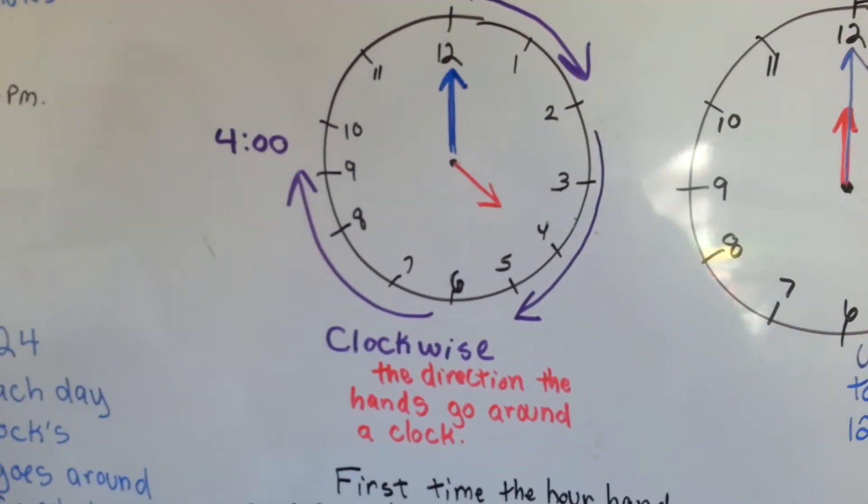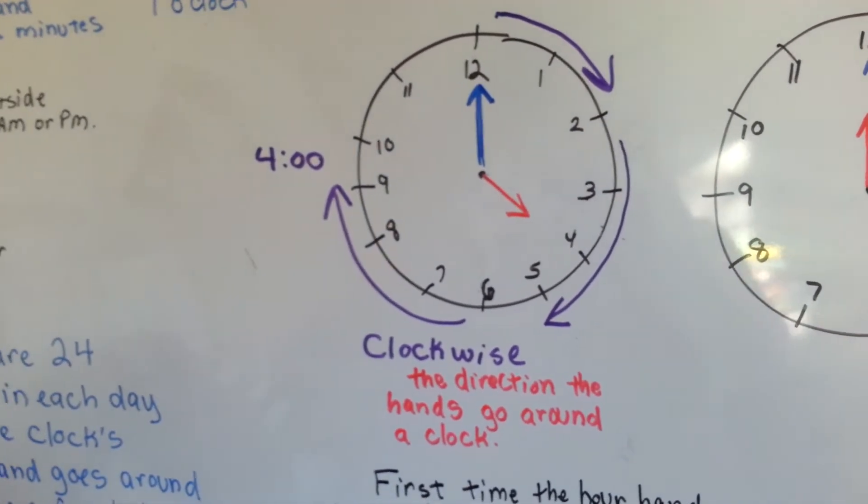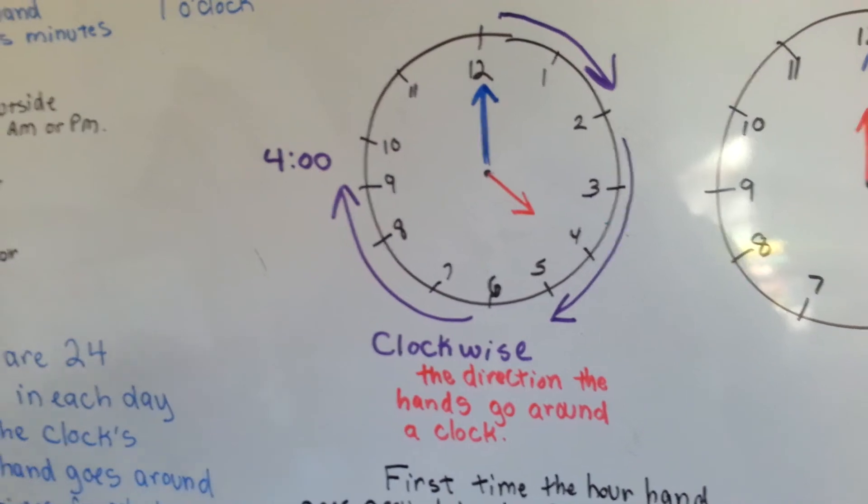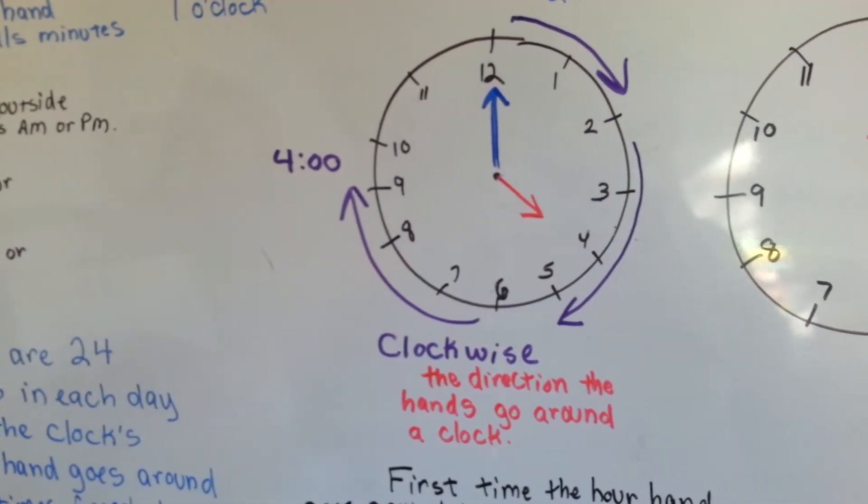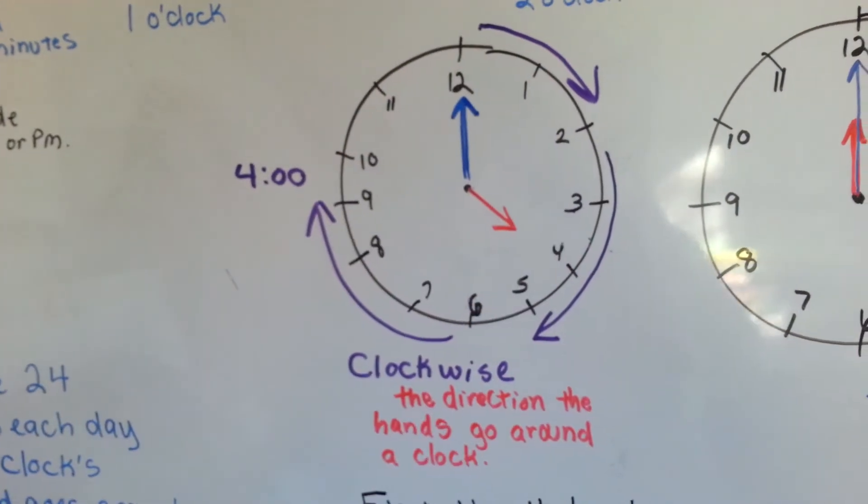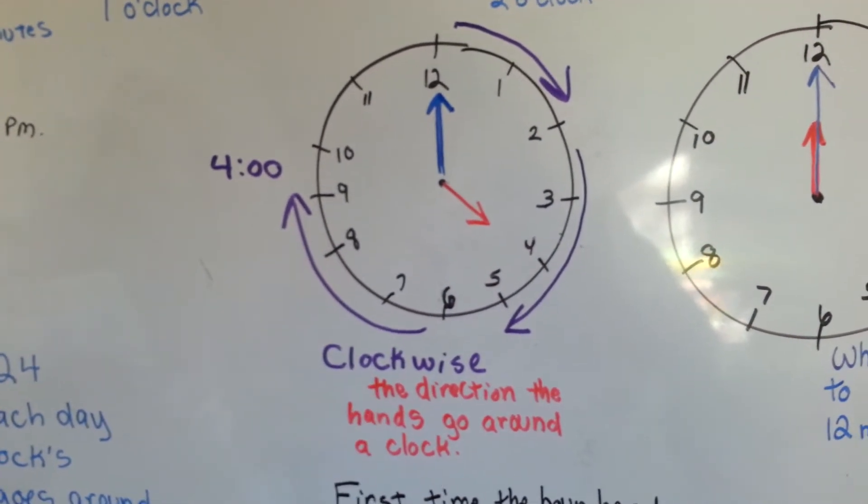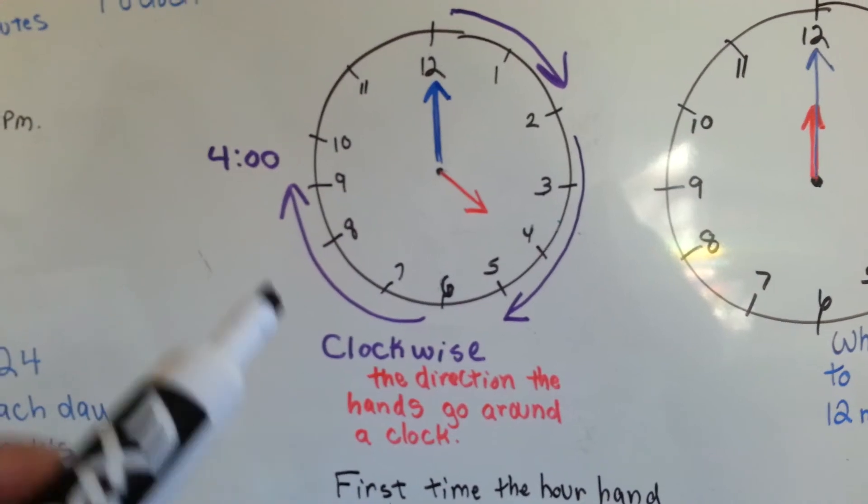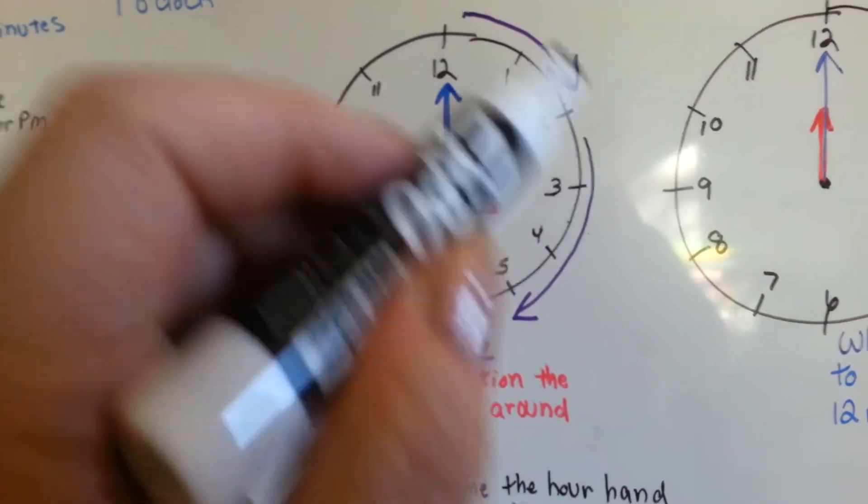You'll hear someone say, 'Hey, can you grab the water hose and twist it clockwise to get it over that bush?' That means they want it to go that way. So people use the term clockwise when they're not even around clocks. It's the direction that the hands are going around the clock.